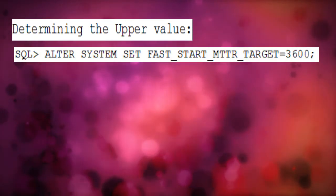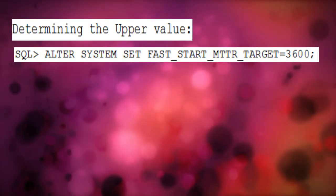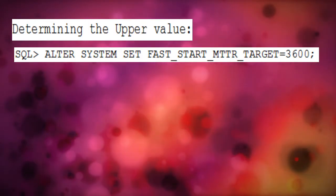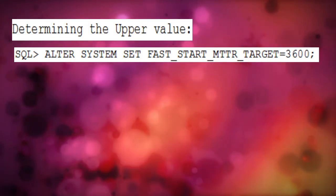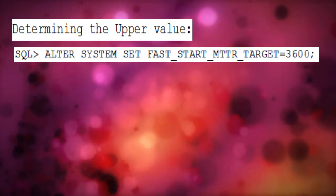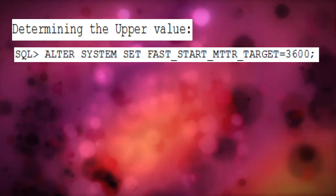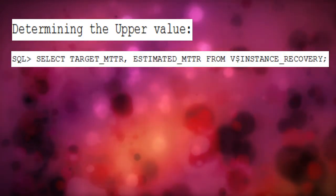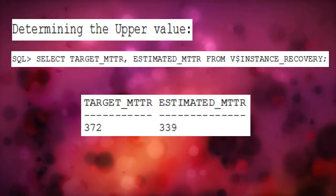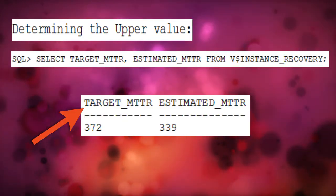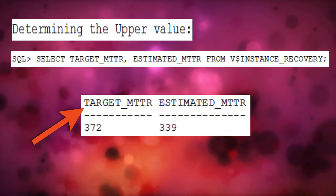To determine the upper value, set the parameter to 3600. Start or bounce the database and let it run for some time to experience peak hour workload, then execute the following query. The value you would see for the target MTTR would be the higher value which the database can actually achieve.